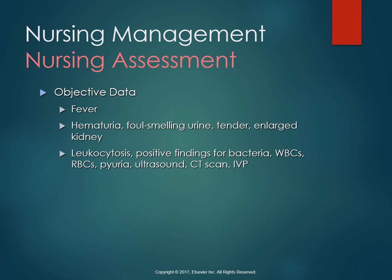Some things we might see on assessment are fever — we usually see that more with upper urinary tract infections like pyelonephritis; we usually don't see it with just an uncomplicated UTI or cystitis. We might notice hematuria. And looking at our urinalysis, we'll see different positive findings for bacteria, such as positive nitrates, positive leukocyte esterase, and WBCs in the urine.